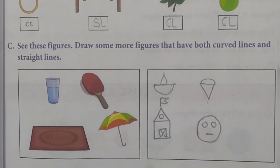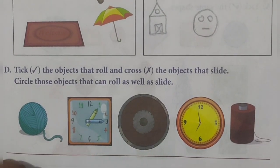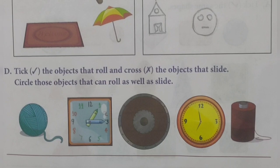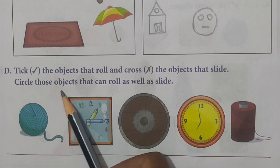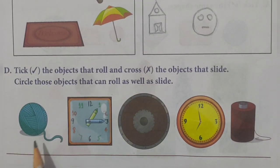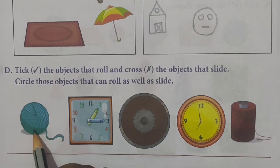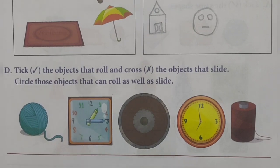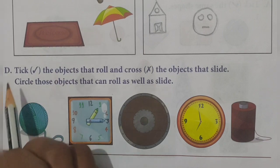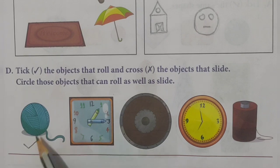Now see: tick the objects that roll, cross the objects that slide, and circle those objects that can both roll and slide. See here — a thread bundle is given. This one has a round shape, so it can roll. Objects which have a round shape can roll, therefore we tick the thread bundle.